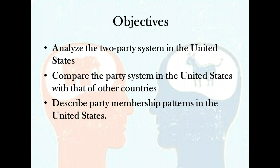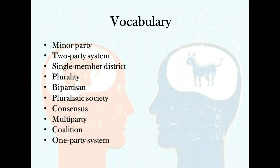Here are the vocabulary words you need to know: minor party, two-party system, single-member district, plurality, bipartisan, pluralistic society, consensus, multi-party, coalition, and one-party system.